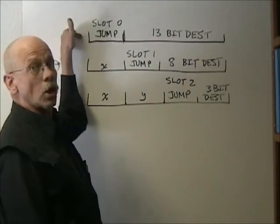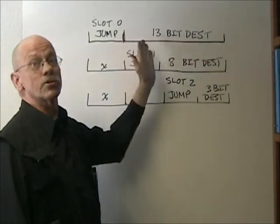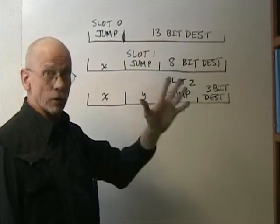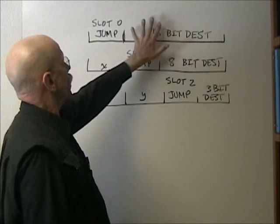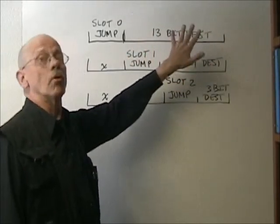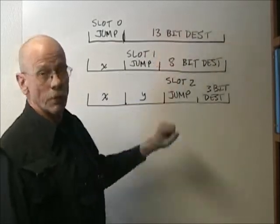A slot 0 jump can go anywhere. It has a 13-bit destination field, much of which we don't use presently. However, those bits are there and available for future instructions and extensions. At any rate, a slot 0 jump can reach anywhere in memory, in RAM or ROM, or in the register address space, the I/O address space. So that's the most universal of the jumps.